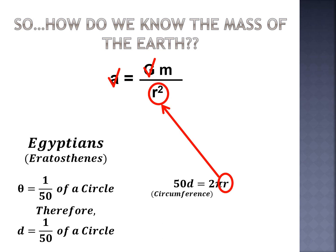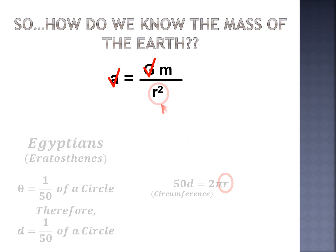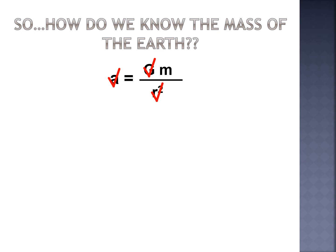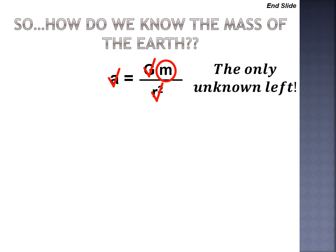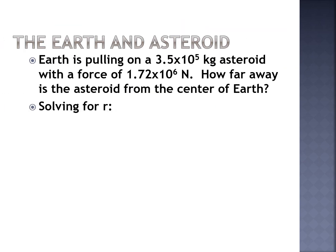Eratosthenes' method wasn't perfectly precise — he used the rate at which a camel walks to estimate the distance between the cities, and Alexandria isn't exactly due north of Aswan. It was actually pretty accurate considering the methods, but we have better measuring equipment now. So combining all three: acceleration due to gravity from pendulums, the gravitational constant from Cavendish, and the radius of the Earth from Eratosthenes — the only unknown left is the mass of the Earth, which is 5.98 × 10²⁴ kilograms.